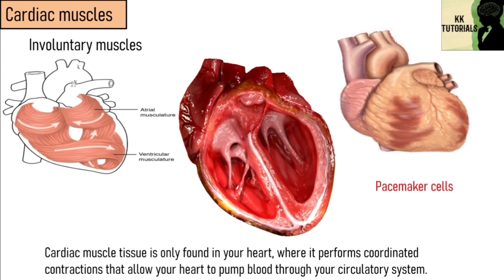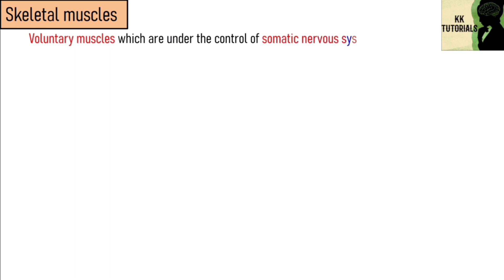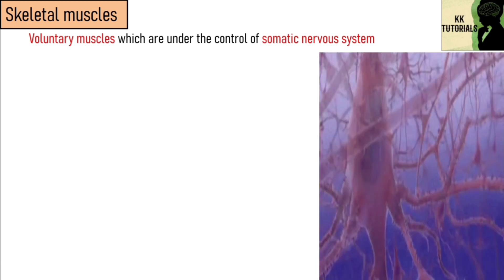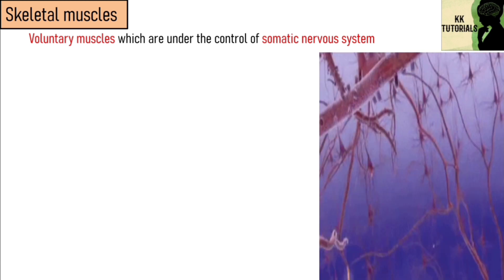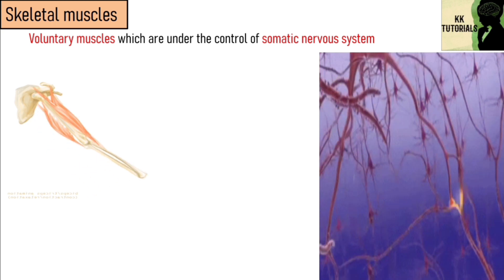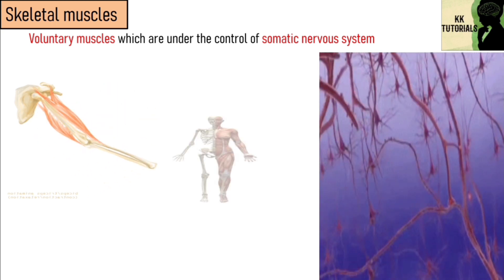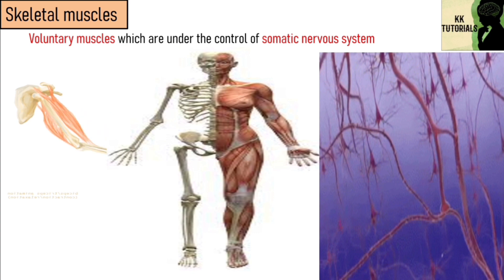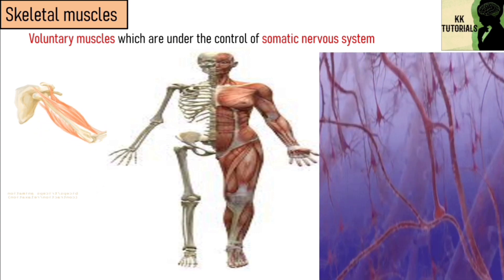The third type is skeletal muscles. They are voluntary muscles and are under the control of the somatic nervous system. Most skeletal muscles are attached to bones by tendons. As the name implies, skeletal muscle is any muscle that connects to and controls the motions of the skeleton.